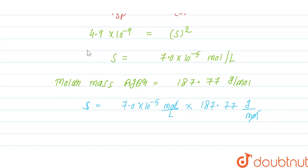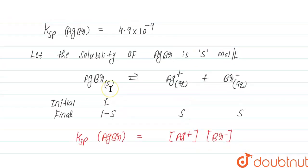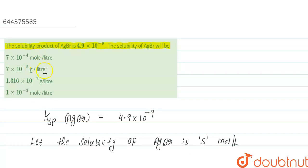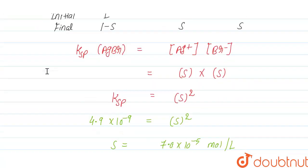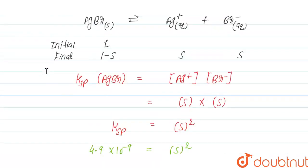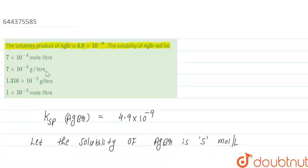The mole units cancel, and we get the solubility s = 1.316×10⁻² gram per liter. So the solubility in mole per liter is 7.0×10⁻⁵ mol/L, but there is no matching option for that. The answer in gram per liter is 1.316×10⁻² g/L, which is option number 3.